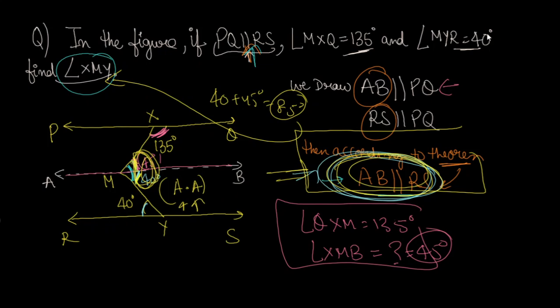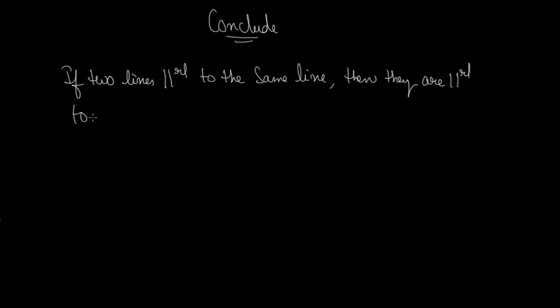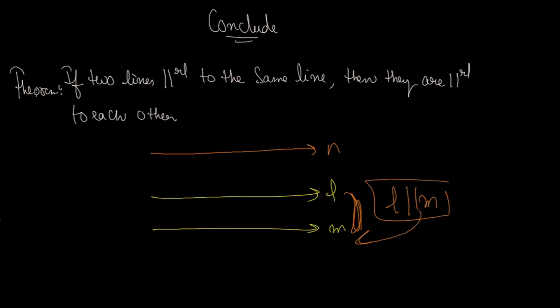The concepts used were: alternate angles and interior angles on the same side of a transversal summing to 180 degrees. But today's main concept is: if two lines are parallel to the same line, then they are parallel to each other. So if L and M are both parallel to the same line N, then L is parallel to M. This is our theorem. See you in the next video!